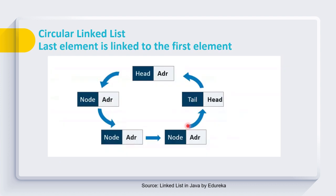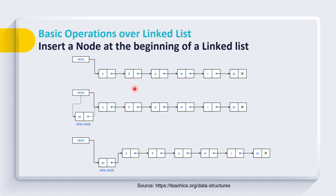The circular linked list is similar to singly linked list. The only difference is that the last element is linked to the first element. In a singly linked list the last element has null in the address part, but here instead of storing null we store the address of the head node. This facilitates traversal of the linked list in a circular fashion, and this is considered as circular linked list.